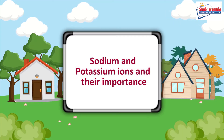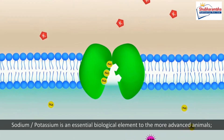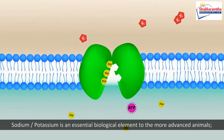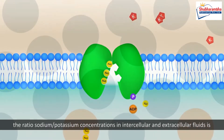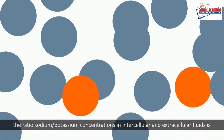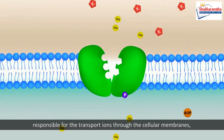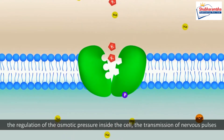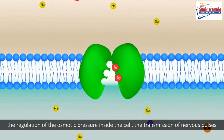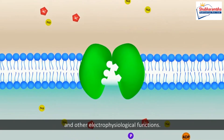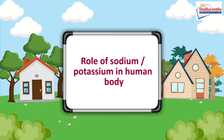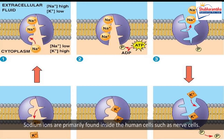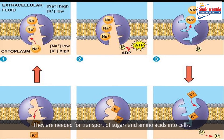Sodium and potassium ions and their importance: Sodium and potassium are essential biological elements for more advanced animals. The ratio of sodium-potassium concentrations in intercellular and extracellular fluids is responsible for the transport of ions through cellular membranes, the regulation of osmotic pressure inside the cell, and the transmission of nervous pulses and other electrophysiological functions. Sodium ions are primarily found inside human cells such as nerve cells; they regulate the flow of water across cell membranes and are needed for transport of sugars and amino acids into cells.